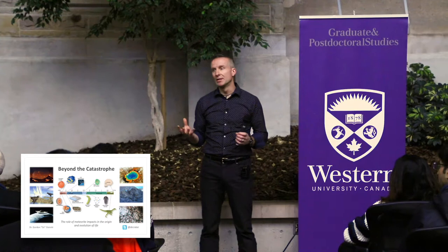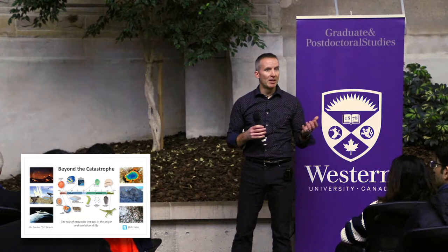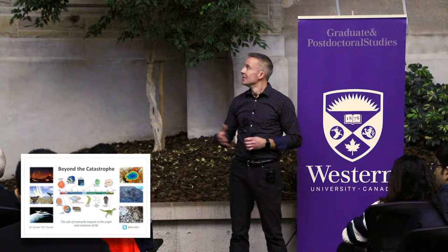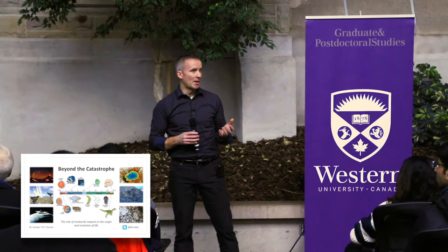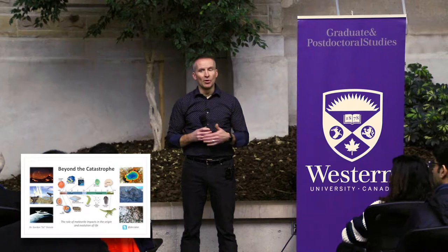Enter meteorite impacts. Many of you may have heard about meteorite impacts because of their destructive effects — pictures of dinosaurs getting wiped out. We do indeed suspect that 66 million years ago, probably 65 percent of all life on Earth, all species, were wiped out in addition to the dinosaurs.